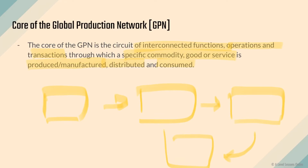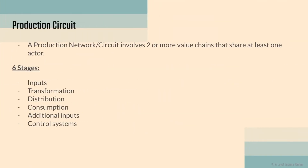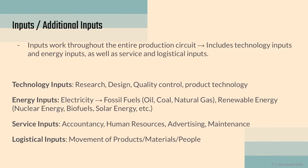The main players involved in a GPN are definitely governments and transnational companies. In this video we're looking specifically at the production circuit. A production circuit involves two or more value chains that share at least one actor. We'll go through it via six different stages: inputs, transformation, distribution, consumption, additional inputs, and control systems.